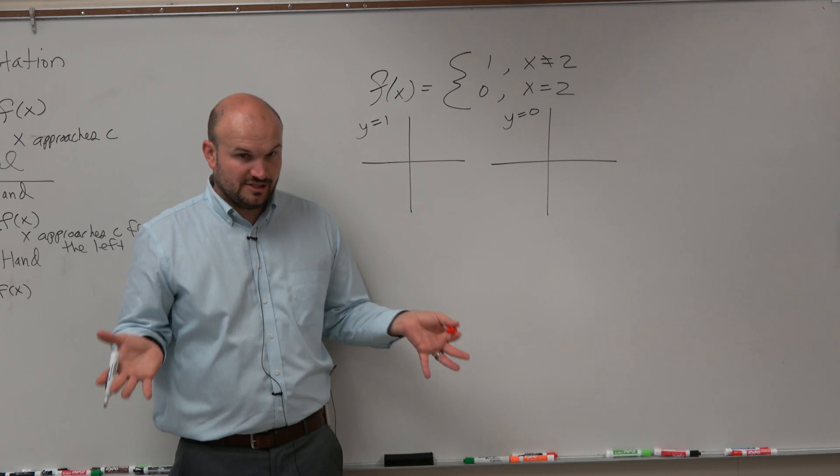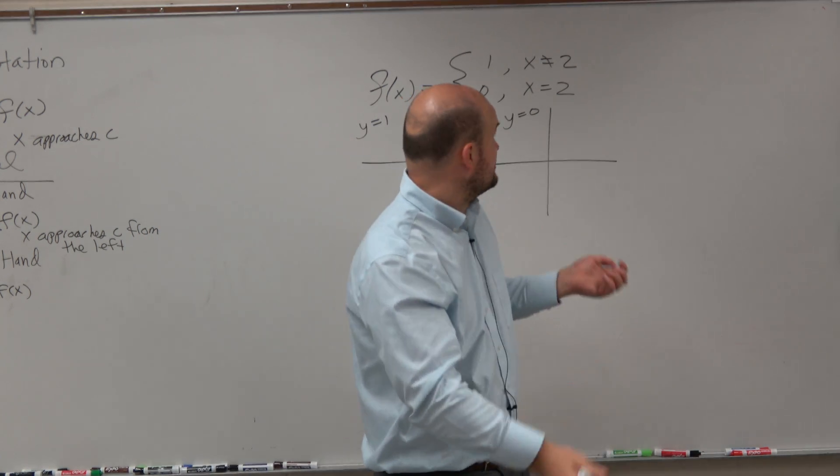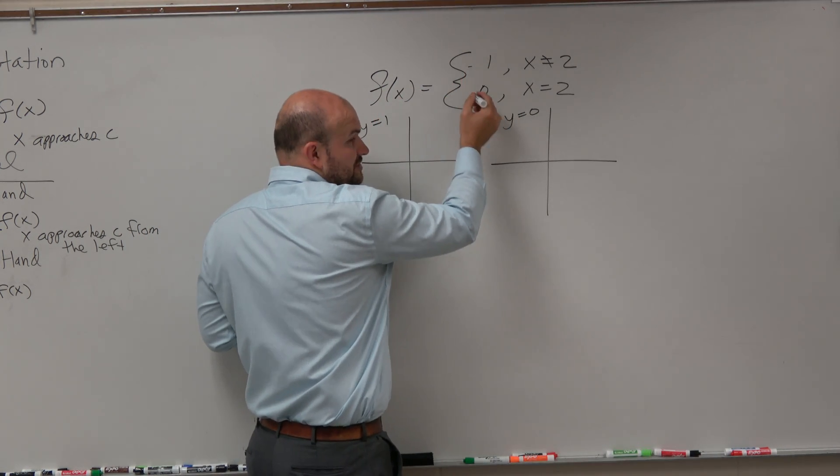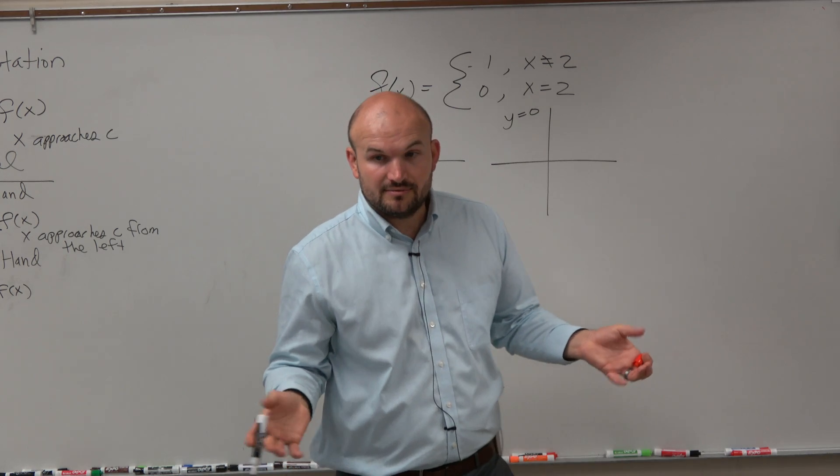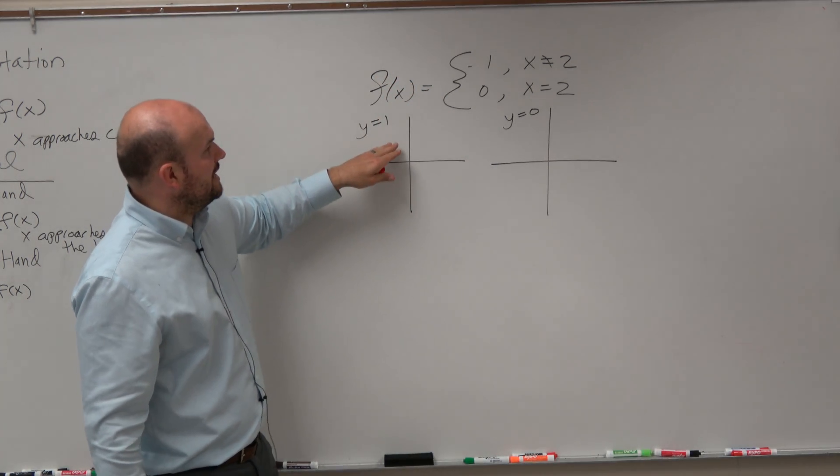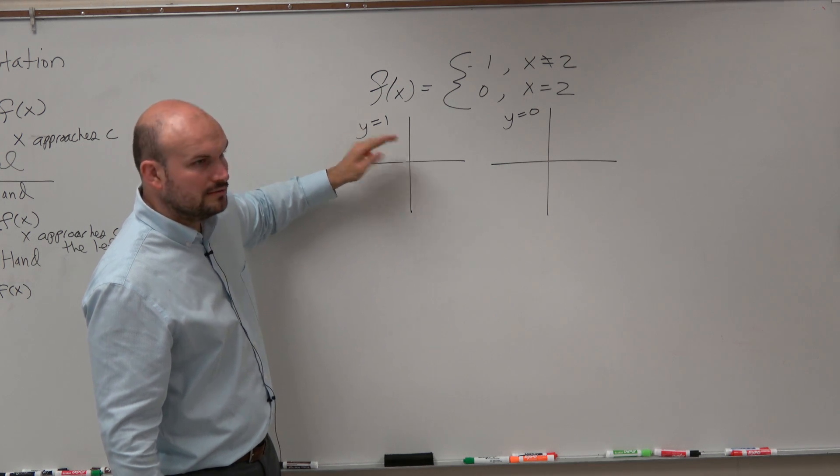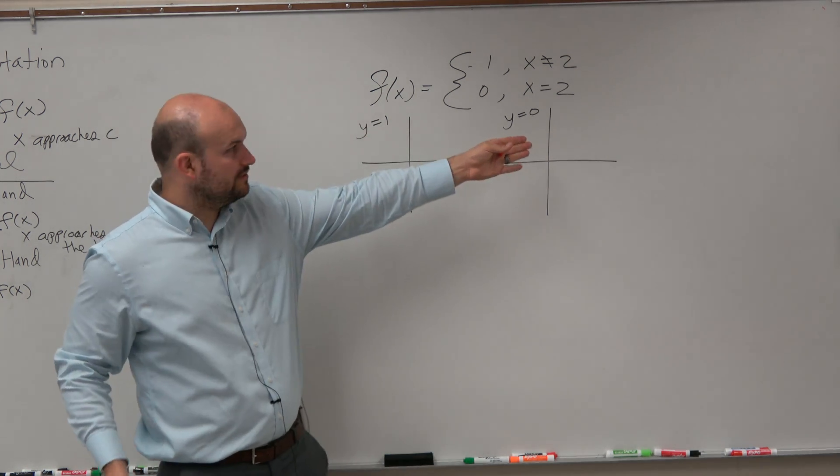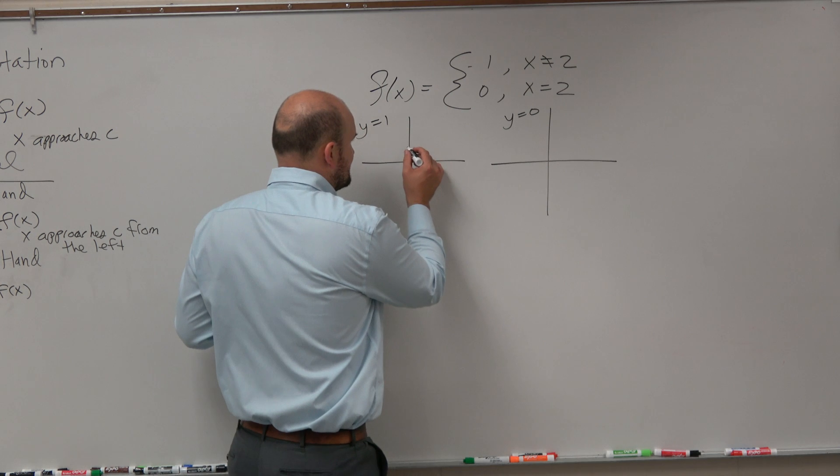So we basically just need to graph these two different functions. Each of these represent a different function. So you can graph them separately and then kind of put them together. So how do you graph y equals 1? Well, just remember we talked about this. y equals 1 and we did that over there. It's just a nice solid line.